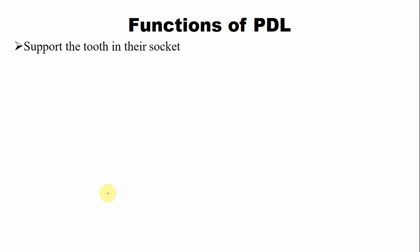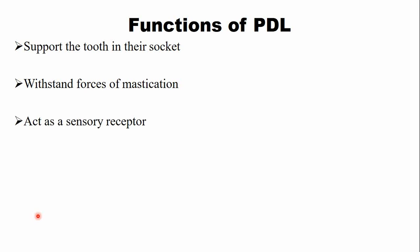What are the functions of the PDL? PDL performs a number of functions. The main function of the periodontal ligament is it supports the tooth in the socket and also withstands the forces of mastication. There are numerous sensory receptors that are closely associated with the PDL, so the PDL has a sensory function as well.